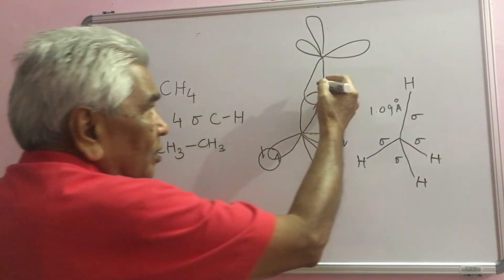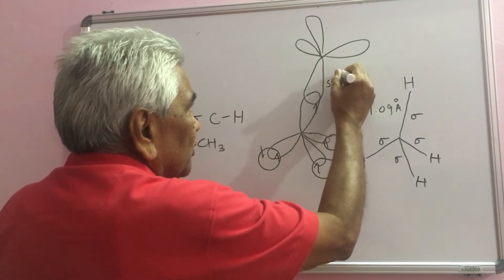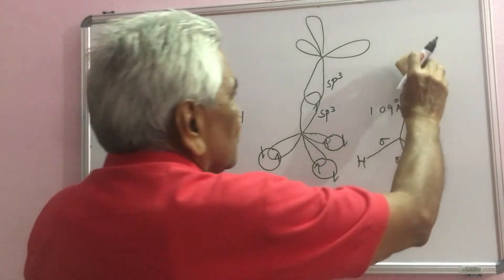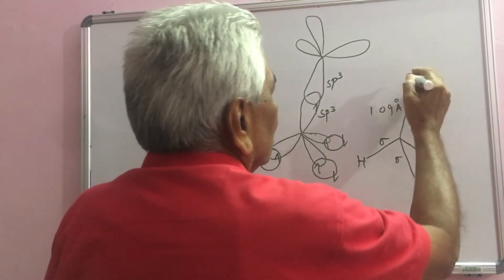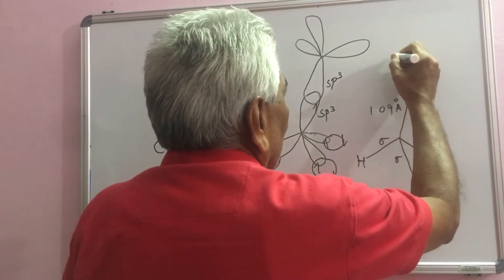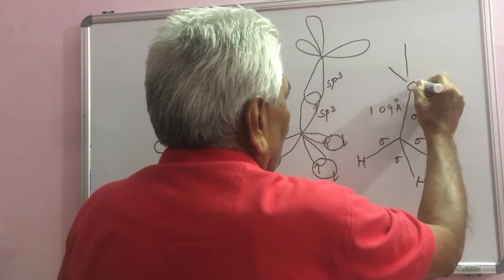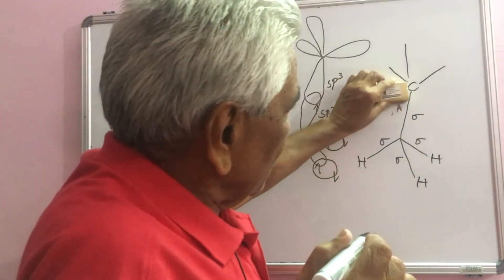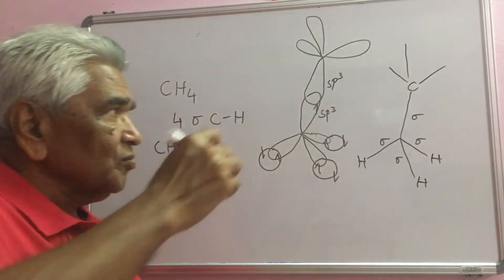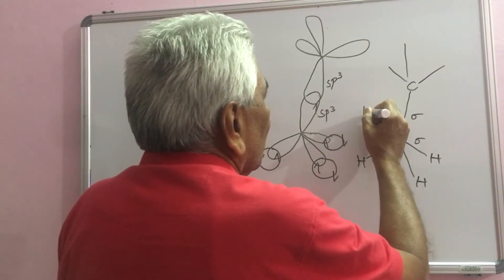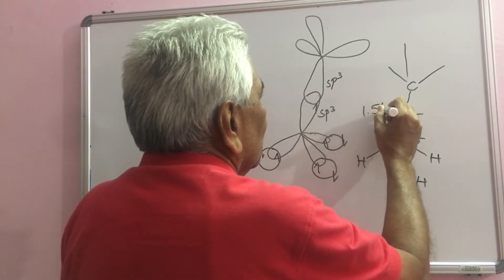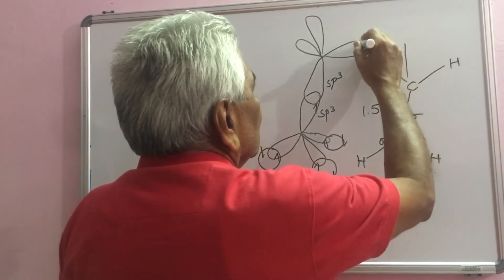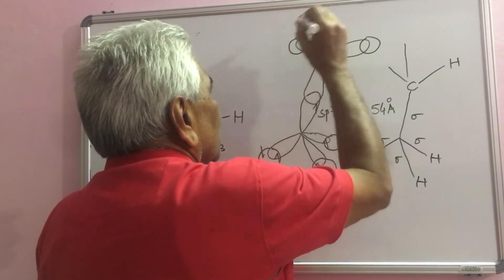Here sp3-sp3 overlap takes place forming a sigma C-C bond. This bond length is 1.54 angstrom units, with 3 hydrogen atoms overlapping on each carbon.